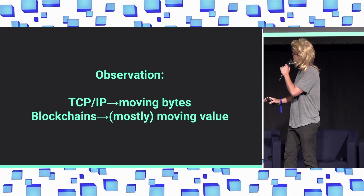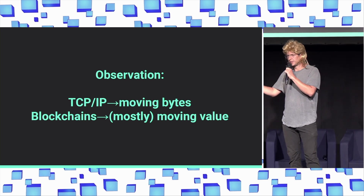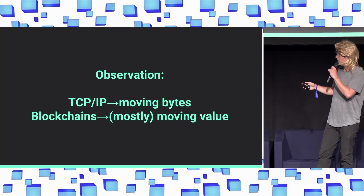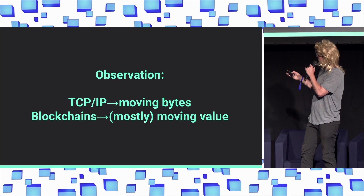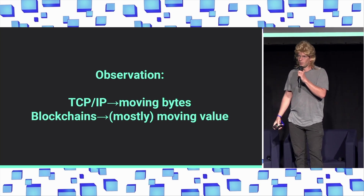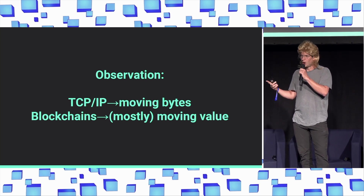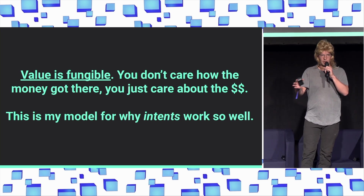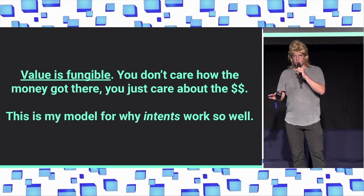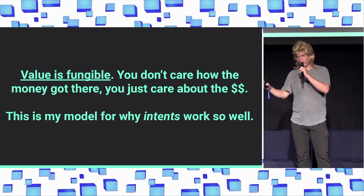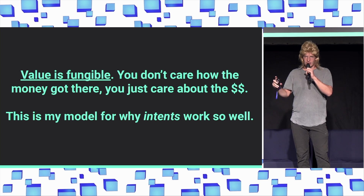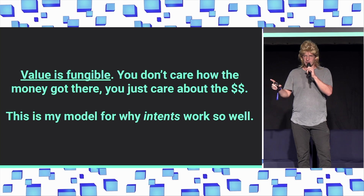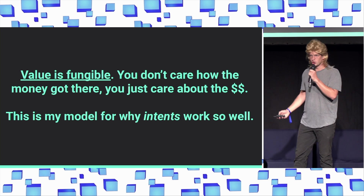The core observation is that in the internet and TCP/IP, you're moving bytes, you're moving messages, you're moving data. But for 98% of blockchain use cases today, when we are connecting between blockchains, what we really care about is moving value. There are use cases where I need to move messages, but most of the time I'm just moving value — I'm bridging, I'm swapping, and maybe I'm calling some action on the destination chain. This further extends to the concept that value is fungible. If I'm a user, I don't care which dollars got to the destination blockchain — I just want dollars. I think this is the core insight that unlocks the cross-chain intents concept: I don't care how the money got there, I don't care which money it is, I just care about it being there.